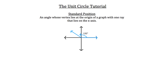An angle is in standard position when its vertex lies at the origin of a graph with one ray that lies on the x-axis. Here you can see two rays that come together to form an angle. One of those rays lies on the x-axis, and the vertex of those two rays lies right here at the origin of a graph in the coordinate plane.